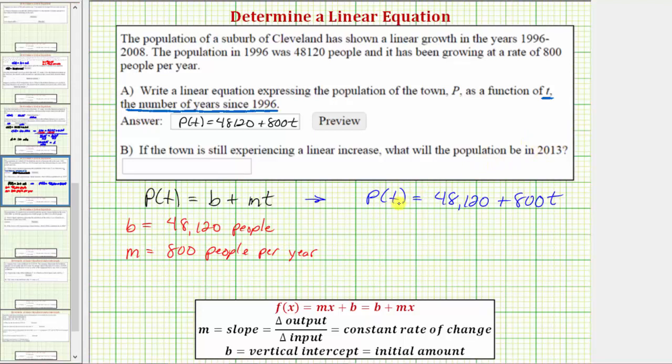So we first need to determine the value of t for the year 2013. To determine the value of t, we take the desired year of 2013 and subtract the base year, or starting year, which in this case is 1996. 2013 minus 1996 is equal to 17.